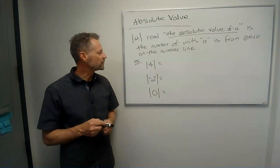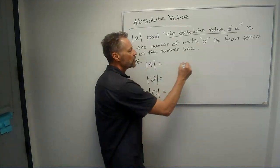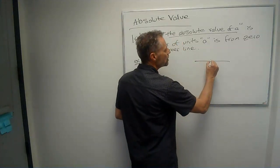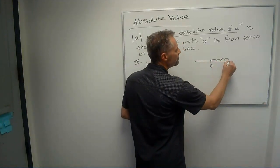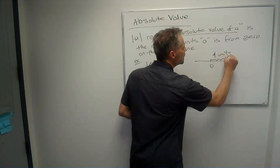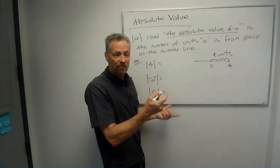So I've got three examples for us. So for instance, the absolute value of 4. Well, if I go to a number line, I put zero there. Well, if I go 1, 2, 3, 4 units, well, there's the number 4. It's 4 units from zero, so the absolute value of 4 is just the number 4.